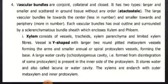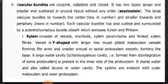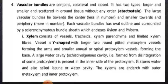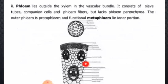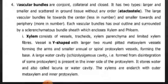Number four: vascular bundles are conjoint, collateral, and closed. Two types are observed — smaller ones towards the periphery and larger ones towards the center. Each vascular bundle is outlined and surrounded by sclerenchymatous bundle sheath and includes xylem and phloem.